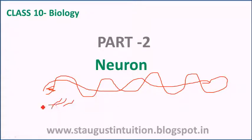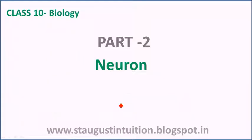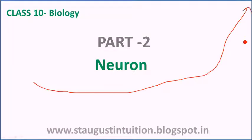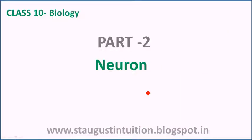What is a Neuron? A Neuron is a nerve cell. We have to talk about Neuron. Neuron is a body — it has a cell body.